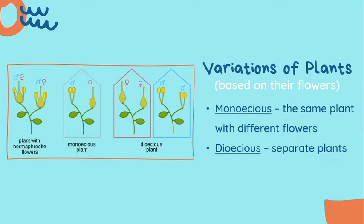Now that we are familiar with the different parts of the flower, there are also different variations of plants based on their flowers. The previous example, the gumamela flower, is considered a hermaphrodite because both the male and female parts are seen within the same flower. We also have the monoecious plant, which means the same plant has different flowers — a male flower and a female flower on the same plant. Examples of monoecious plants include corn, squash, and pine. We also have the dioecious plant, which means we have separate plants — a female plant and a male plant. Examples include papaya, asparagus, and spinach.